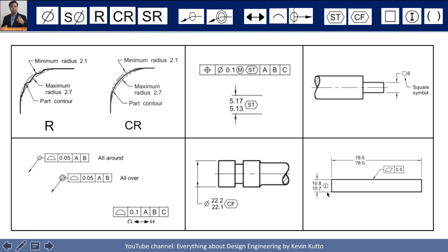One important symbol is I for Independency. We know the first rule of GD&T is perfect form at maximum material condition. But in some cases we don't need a perfect form at MMC. We can overwrite that rule with the Independency symbol. It means that at the MMC size of 10.8, perfect form is not required — instead, a flatness tolerance of 0.5 is allowed beyond that. Without the I symbol, the entire tolerance must be inside the envelope; with the I symbol, we can allow that additional flatness deviation.